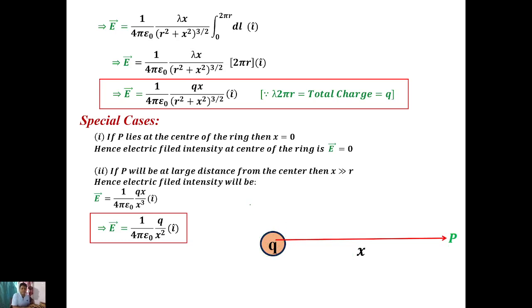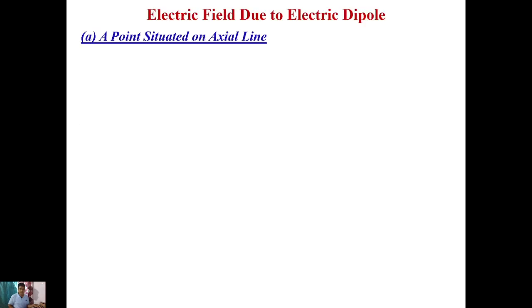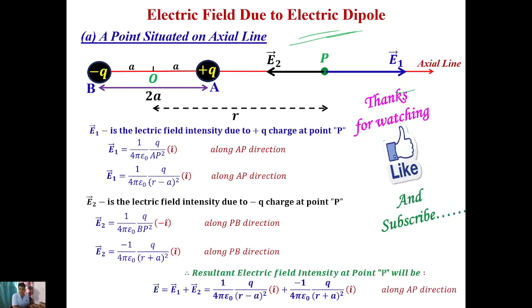This is all about the electric field intensity at any arbitrary point on the axis of a uniformly charged circular ring. This topic is useful for your Plus Two exams and also for the BSc second semester exam, where it can be asked for a five to six mark question. In the next class, we are going to discuss the electric field due to an electric dipole. Thank you for watching — please like, subscribe, and stay tuned.